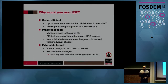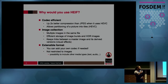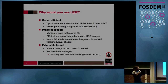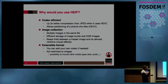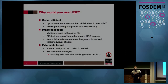So, why would you use HEIF? In terms of coding, it offers two times better compression than JPEG when using HEVC. It allows the partitioning of pictures into tiles. We also have multiple images in the same file. It's efficient in terms of storage of image bursts and HDR images. It keeps links between a master image and its derived version. And it's an extensible format — you can add your own codec if needed, and it's not restricted just to images. You have the possibility to include other media types like text and audio.